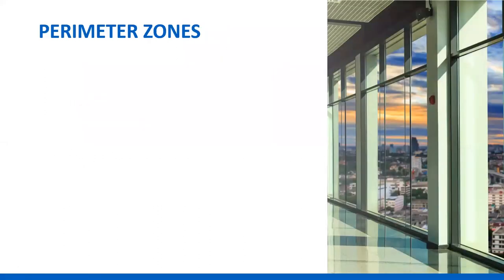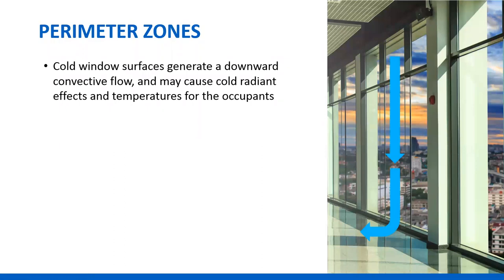Loads are a lot less in perimeter zones than they used to be because we got better glass. But the cold surface generates a downward convective flow and may cause cold radiant effects for occupants. There's some debate about the radiant effect. When ceiling heating is used, the ceiling gets warm and offsets the cold window — the mean radiant may be neutral in a lot of perimeter zones.